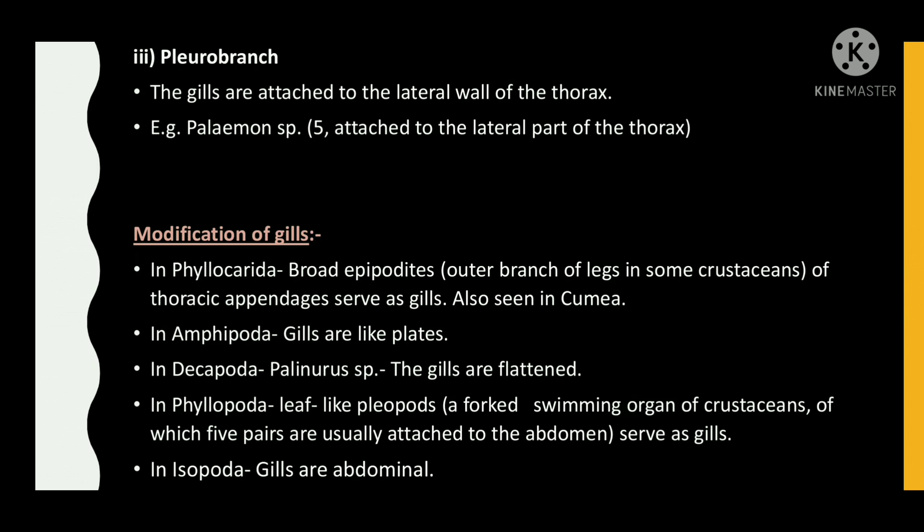Modification of gills: In Phyllocarida, broad epipodites of thoracic appendages serve as gills, also seen in Cumacea. In Amphipoda, gills are like plates. In Decapoda, Palinurus species, the gills are flattened. In Phyllopoda, leaf-like pleopods — a forked swimming organ of crustaceans of which five pairs are usually attached to the abdomen — serve as gills. In Isopoda, gills are abdominal.